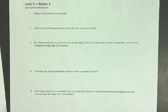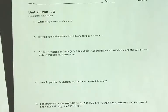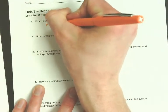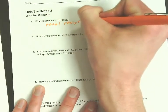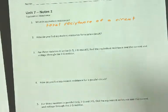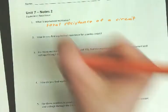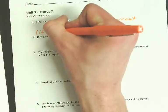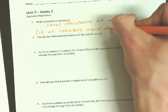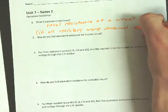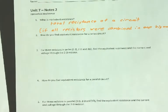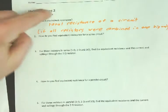Number one. What is equivalent resistance? We need to define it first before we can do anything else. We just did this in the lab. Equivalent resistance is basically the total resistance of a circuit. If all resistors were combined in one big one, what's the value? That's what equivalent resistance is.